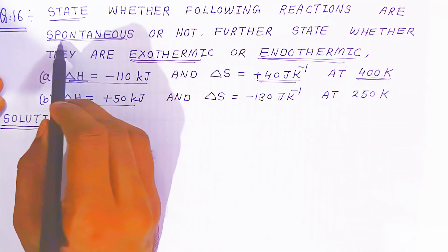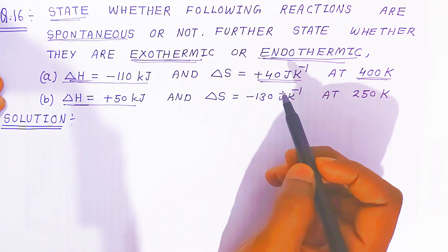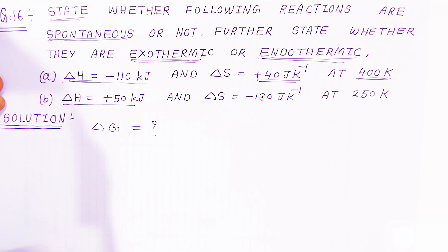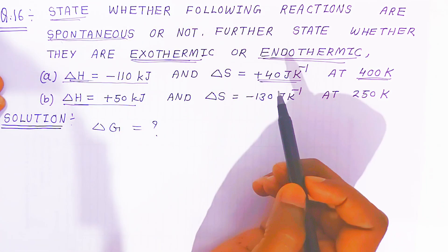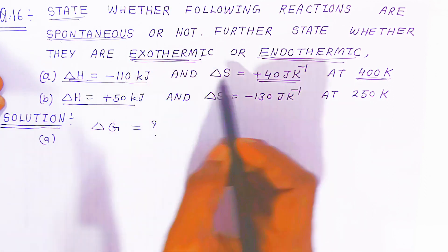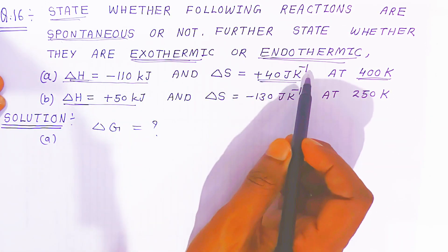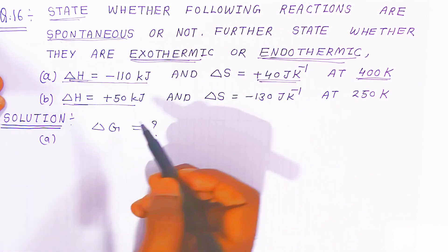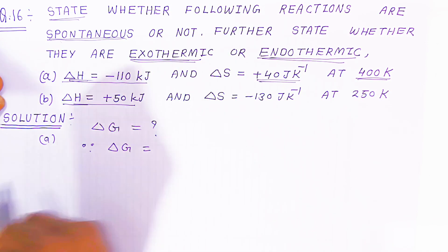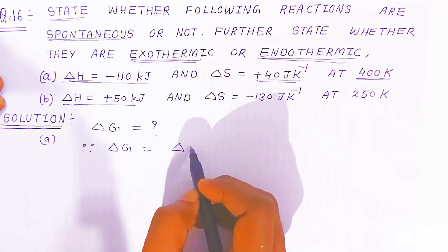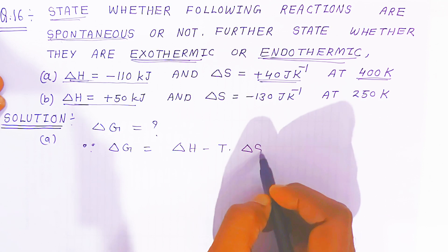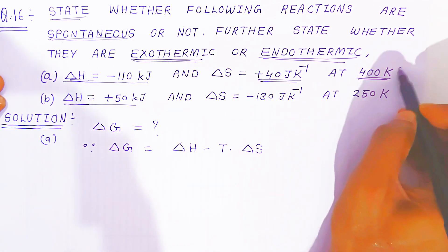But if you want to find the spontaneous and non-spontaneous reaction, you have to find the value of ΔG. Change in Gibbs energy is very important for finding the spontaneous and non-spontaneous reaction. So in the first reaction, if ΔH is given minus 110 kilojoule and ΔS change in entropy is given 40 joule per kelvin, what will be the change in Gibbs energy? You know the formula: change in Gibbs energy is nothing but ΔH minus T into ΔS. Here, temperature is capital T.